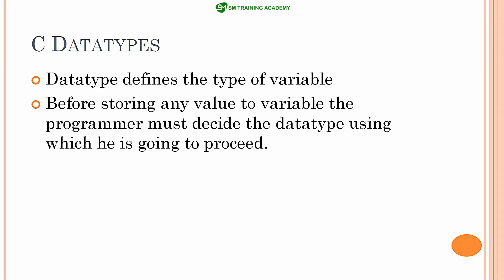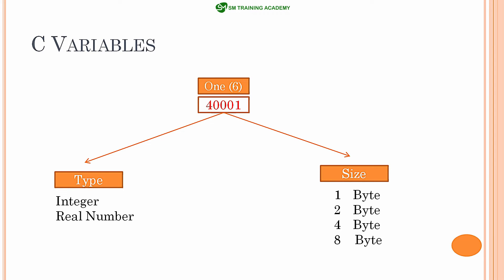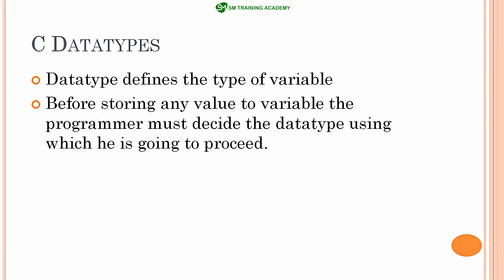C language has default data types which help us define and declare variables. Each data type has a default type and size. If you choose a particular data type and declare a variable based on it, that defines both the type of data you are storing and the maximum size of data in that variable. By default, C language provides several data types for a particular type and size of data to be stored.